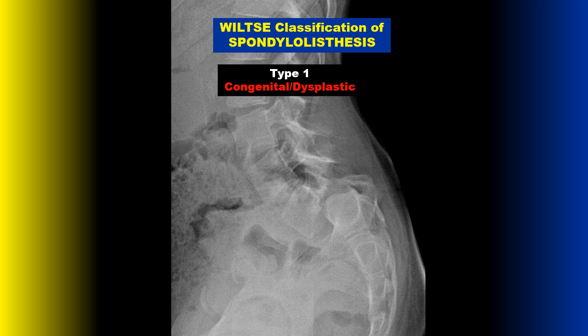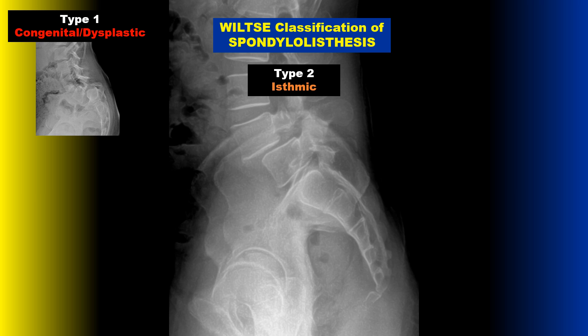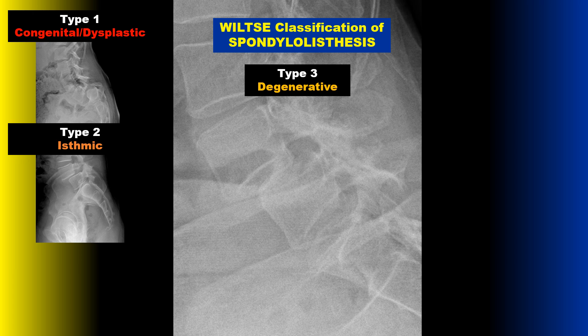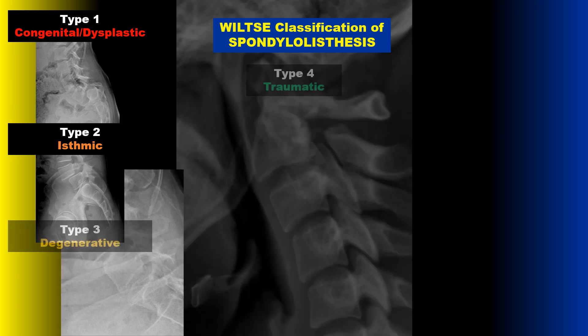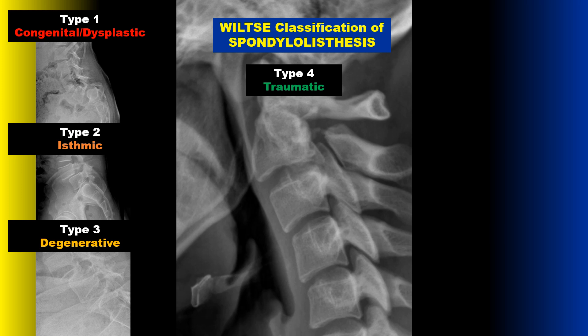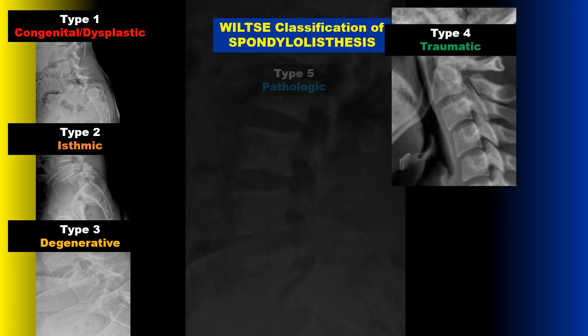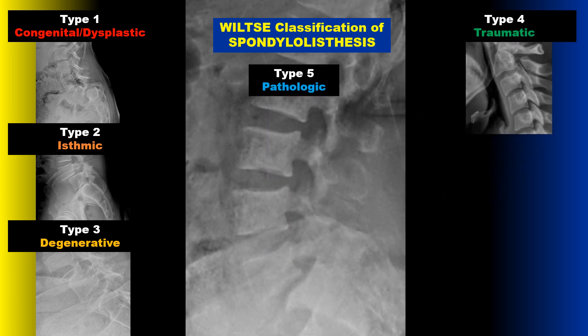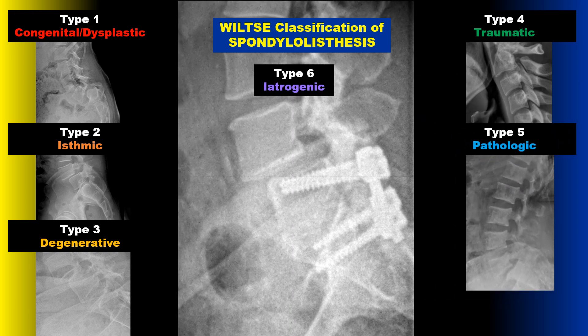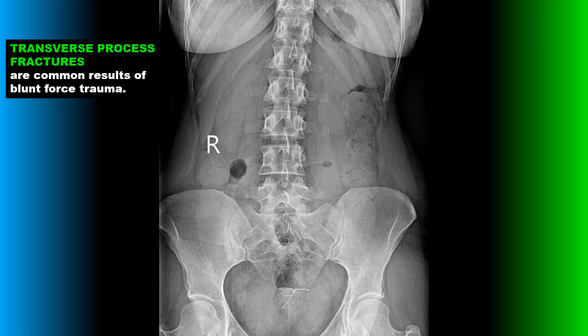The Wiltse classification of spondylolisthesis categorizes cases by etiology. Type 1 is congenital or dysplastic. Type 2 is isthmic, which is a pars defect and very common. Type 3 is degenerative, due to facet arthrosis. Type 4 is traumatic and not very common — it can be seen in the cervical spine in things like a hangman's fracture. Type 5 is due to underlying pathologic bone, such as bone marrow diseases or metastasis. Type 6 is post-surgical or iatrogenic, where a fusion causes excessive motion at the segment above, leading to atypical stresses and spondylolisthesis.